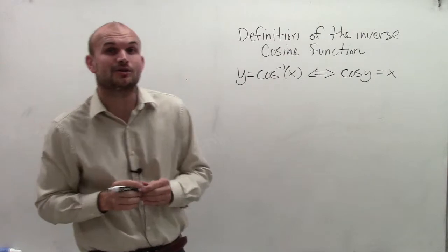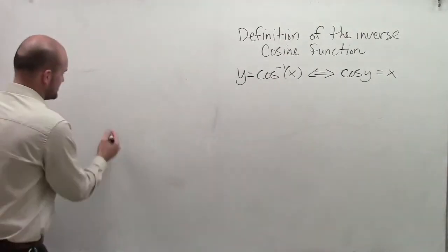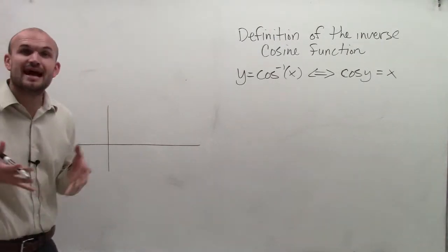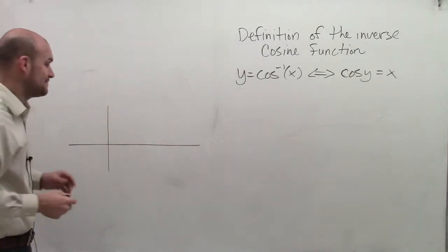Another way to look at the inverse cosine is to look at the graph. Let's go back to our cosine function and take a look at what the graph is, and then how the inverse cosine graph would look as well.